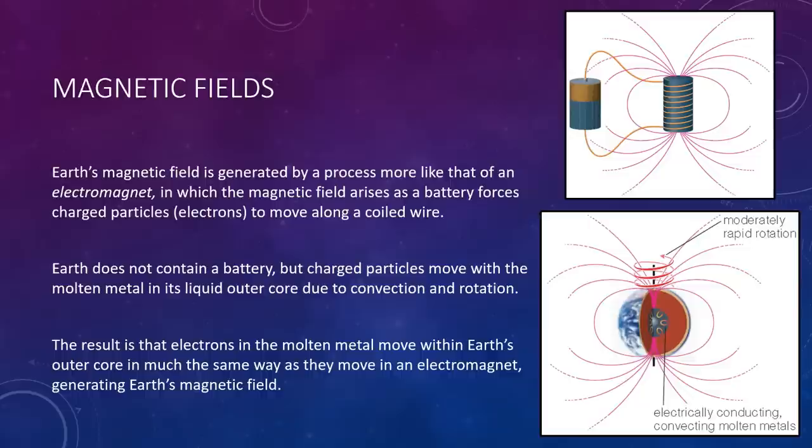Earth's magnetic field is generated by a process more like that of an electromagnet, in which the magnetic field arises from a battery that forces charged particles—electrons—to move along a coiled wire. You can see this here. This is a battery just hooked up to some wire. And if you wrap the wire into a loop, it will create a magnetic field that creates a similar looping structure. I won't go into the physics of this. My physics 2 class does go into a lot of detail about how this electric current can create a magnetic field and things like that. But for our course here in astronomy, we'll ignore a lot of the physics. But the point is, a battery hooked up to a coil of wire does produce a magnetic field shown by the pink lines.